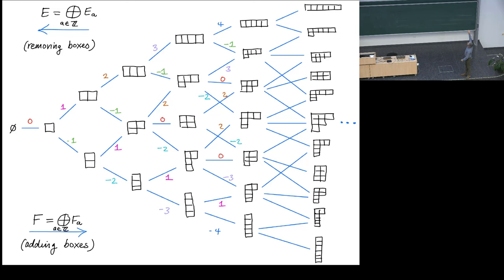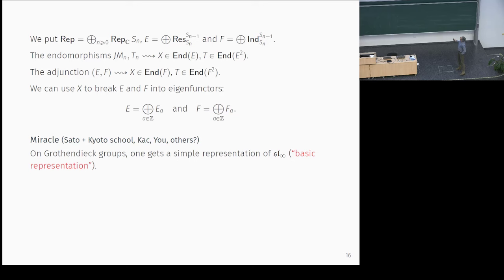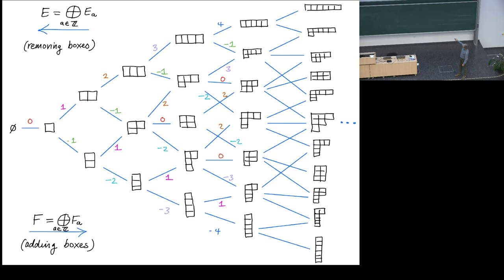When you apply one of these E_i operators, you either get a simple module or zero, with some combinatorial rule for what happens. What is absolutely remarkable is that if you just take this enormous vector space with these operators and work out what relations they satisfy, they satisfy the relations of sl_∞, a big Lie algebra. Moreover, this is a simple representation of this enormous Lie algebra.